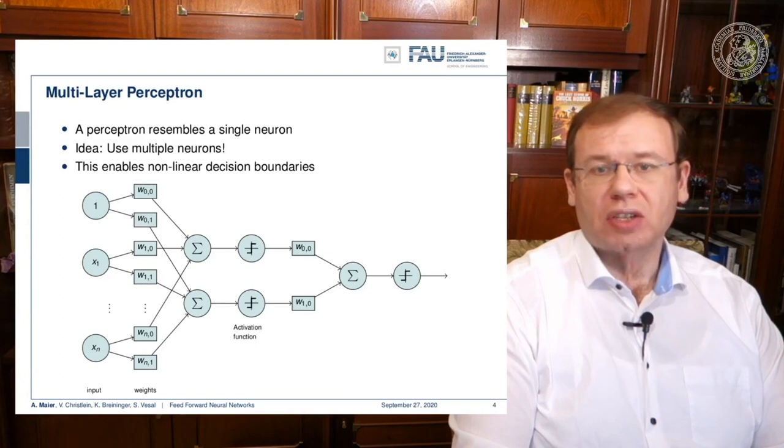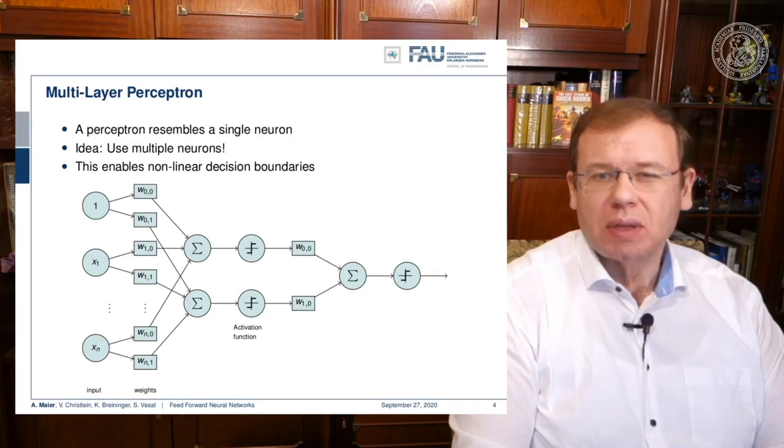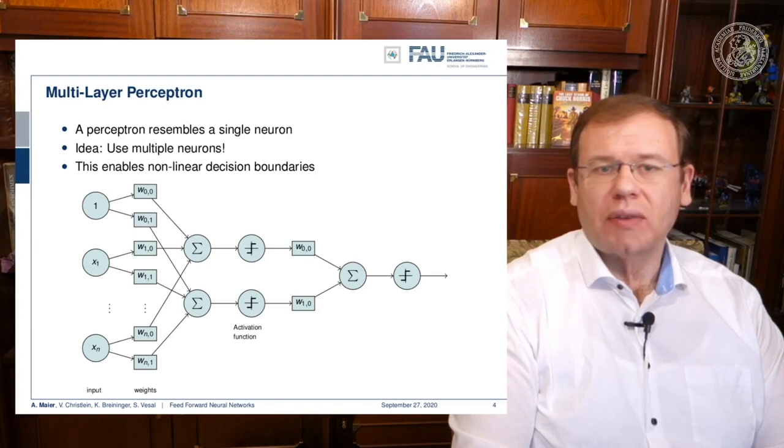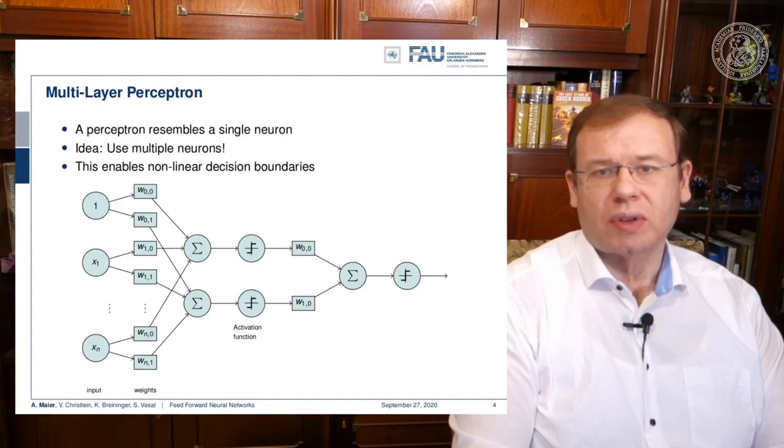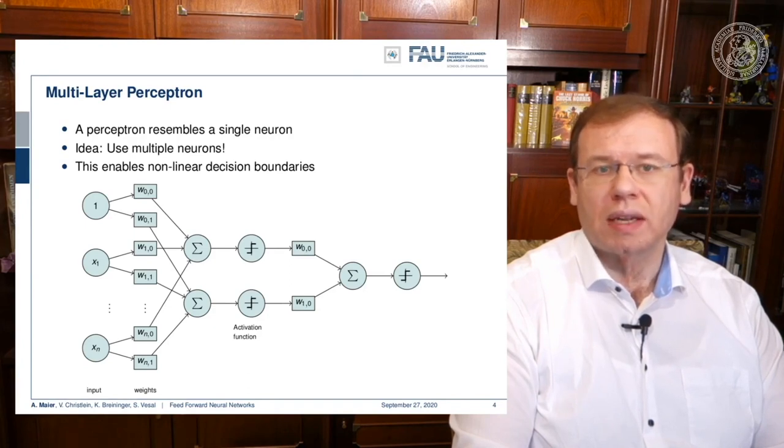Things change with the introduction of the multilayer perceptron. This is now the expansion of the perceptron. You use multiple neurons and you arrange them in layers. You have essentially some inputs and some weights. We have several of those sums that go through a non-linearity, then they assign weights again and summarize again to go into another non-linearity.